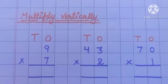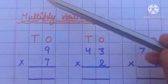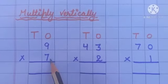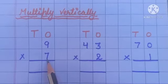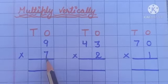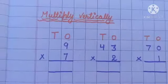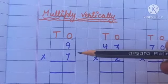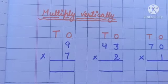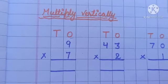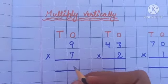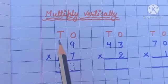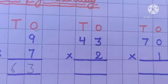Now let's solve sums of multiplication vertically. We have to start with the ones place. Look at the number at the ones place here — 7. Seven into nine: recite the table of seven till nine. Seven nines are 63. So write 3 at the ones place and 6 at the tens place.